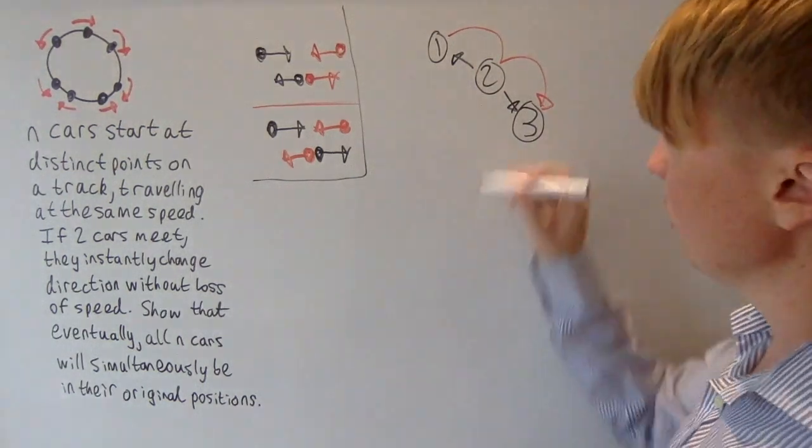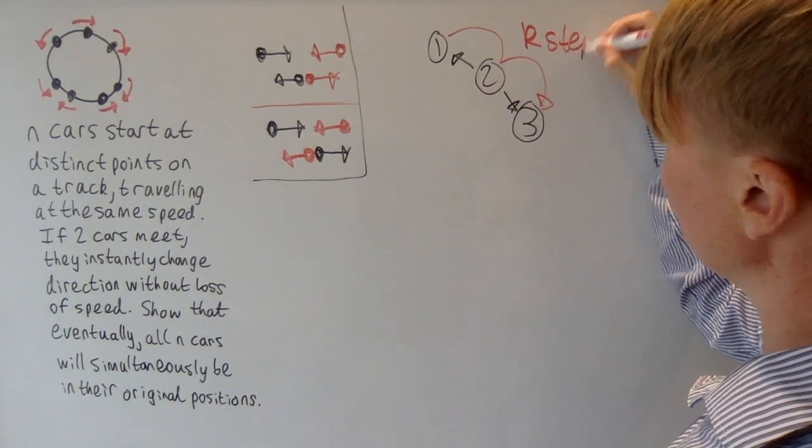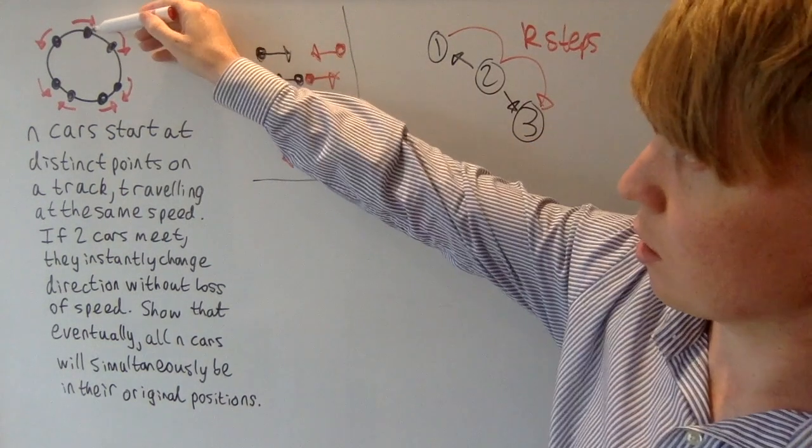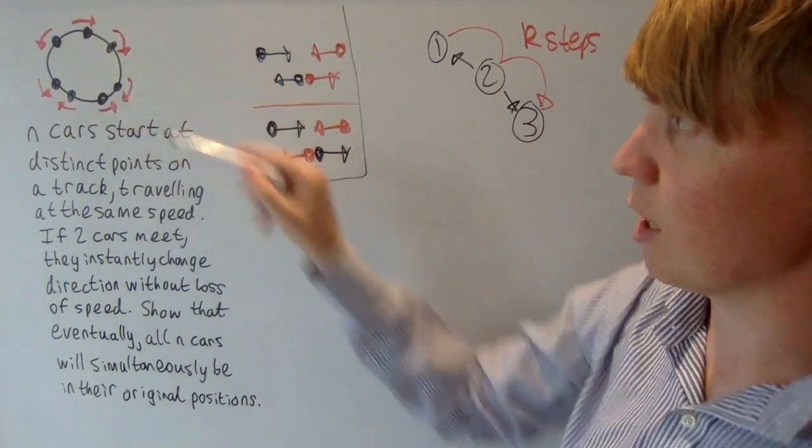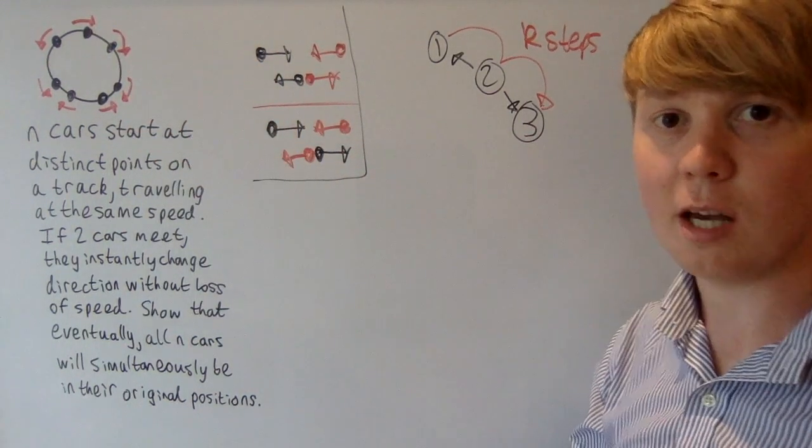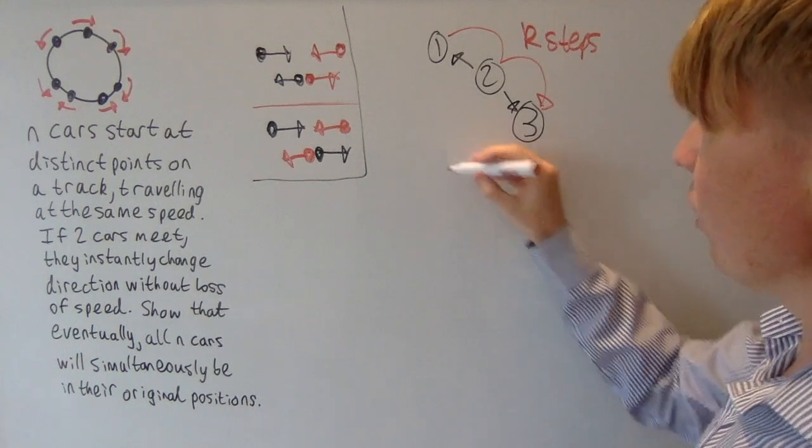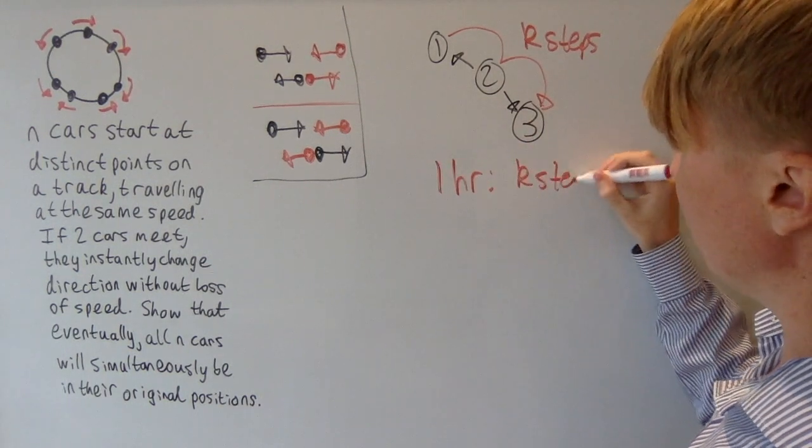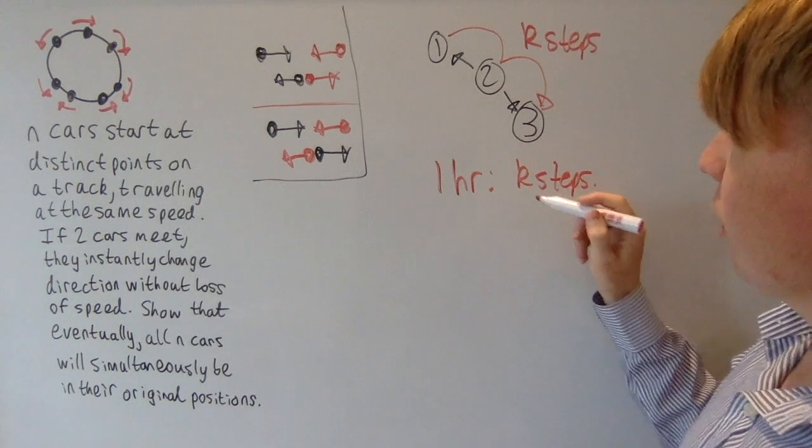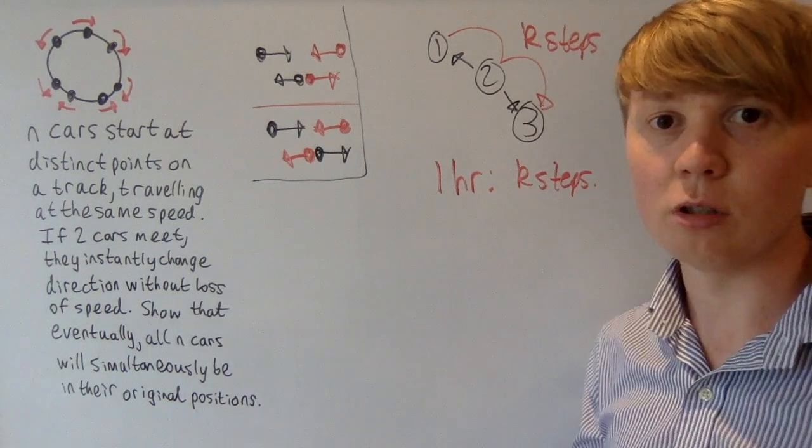let's say that car one has gone k steps along in this configuration. So maybe it started here, but then after one hour it's gone down here. It's done some certain number of steps. And after one hour, we go k steps along and all of the cars have moved k steps along because this order is preserved.